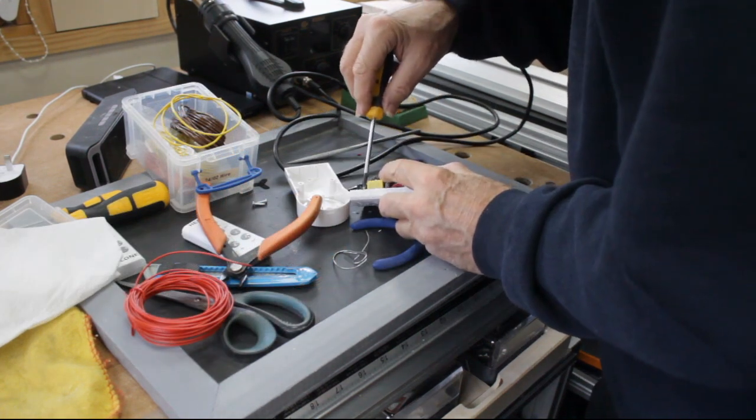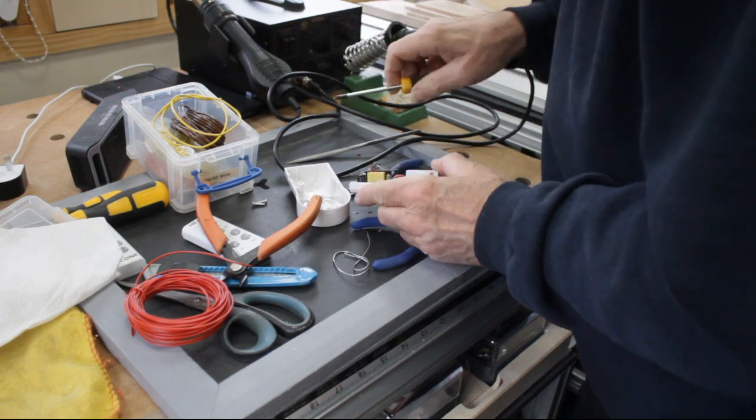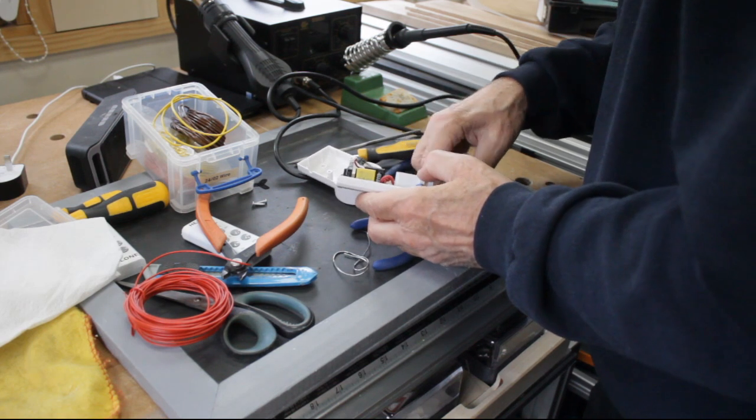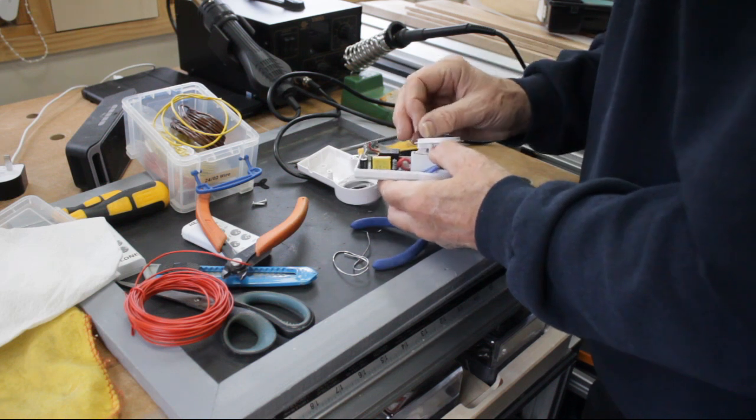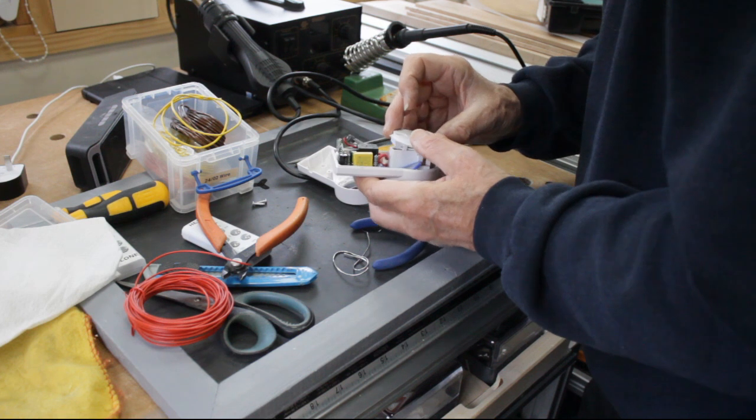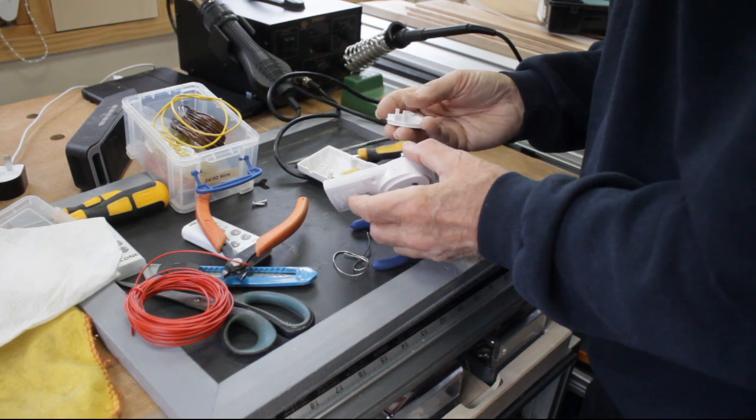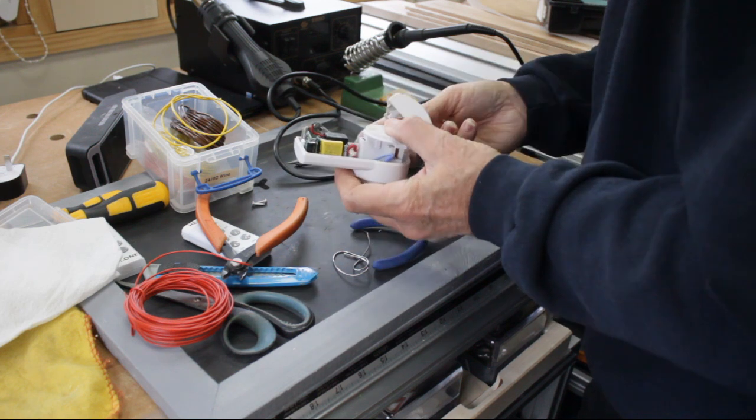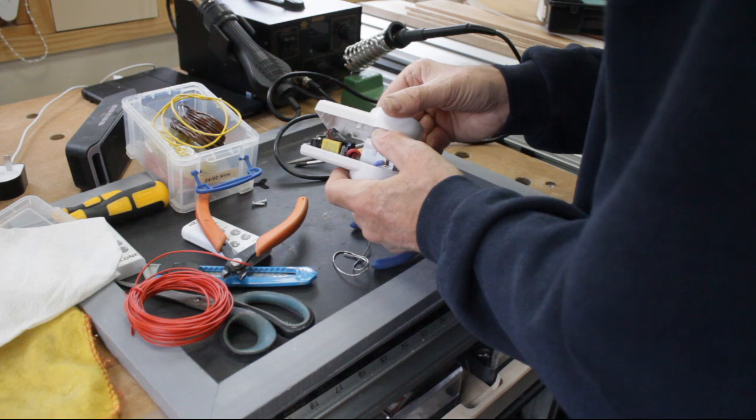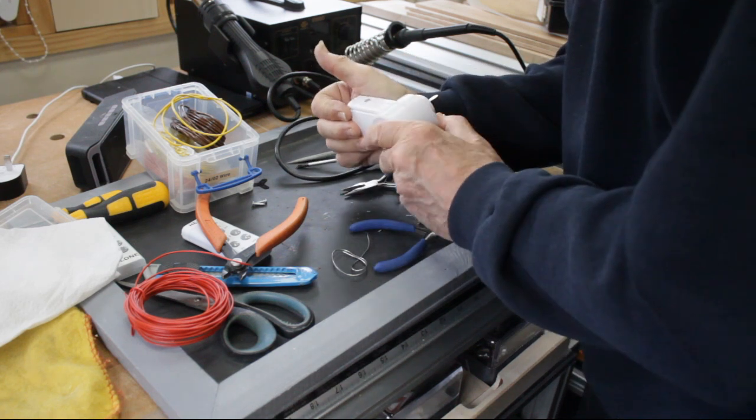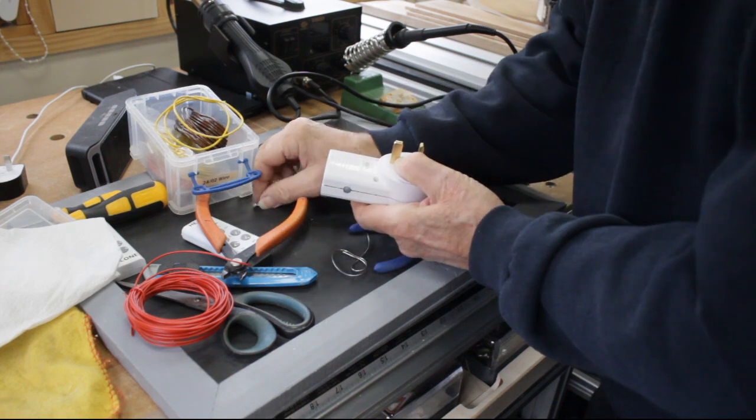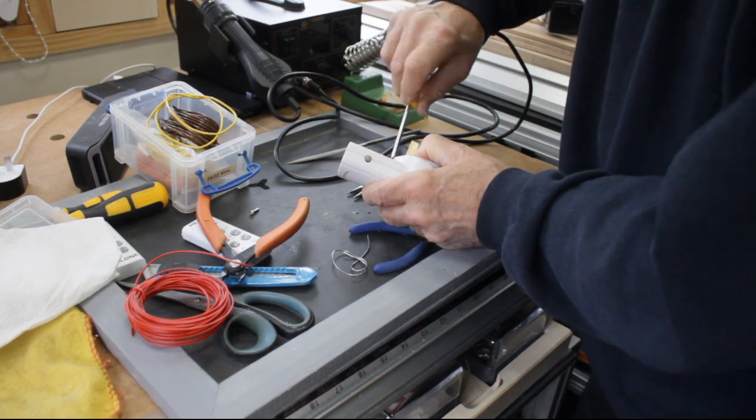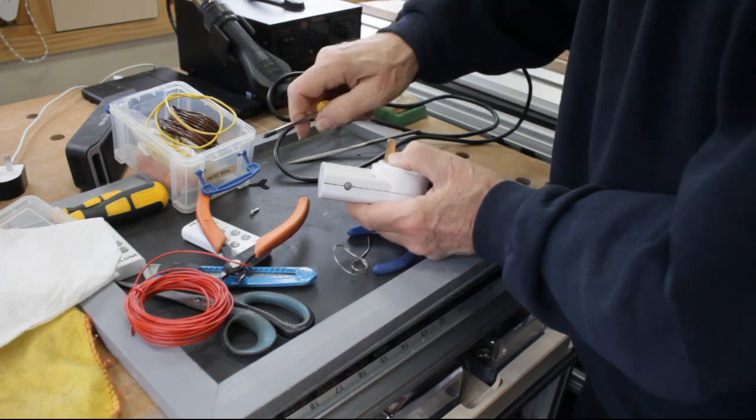Just pop the other one on the other end, put the heat shrink on first of course, and then we can put it all away. Screw the circuit board back in, put together the safety latch, right, screw the cover back on.